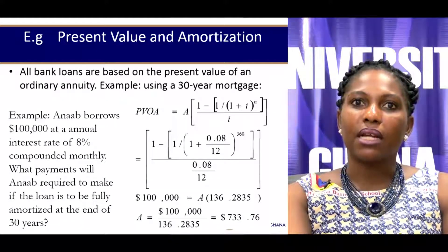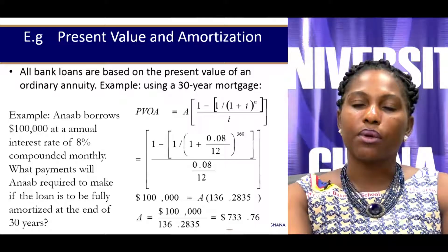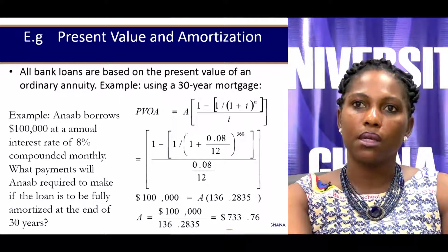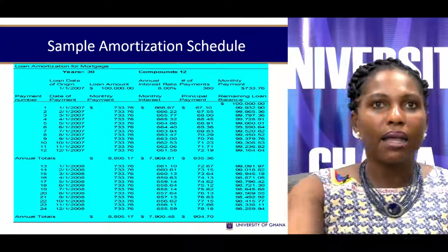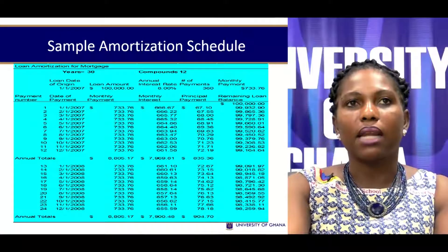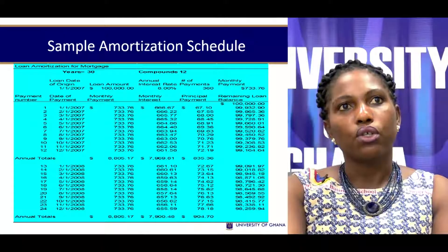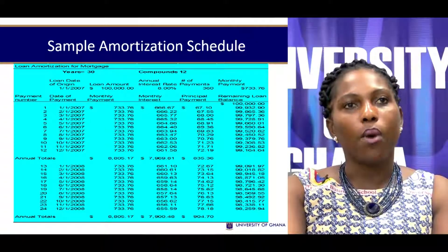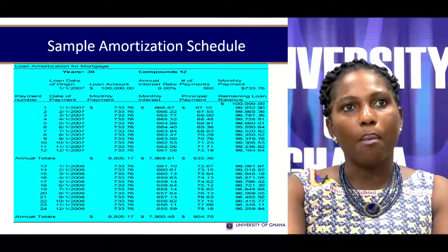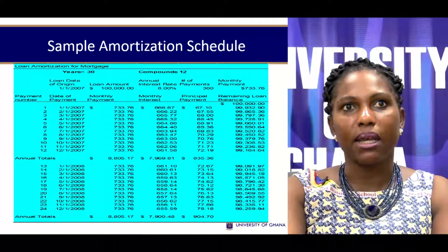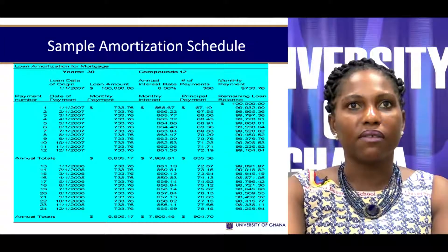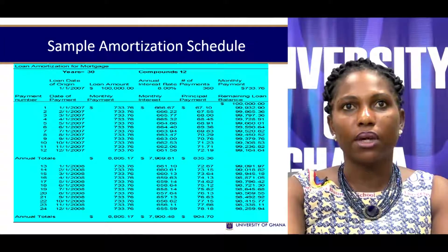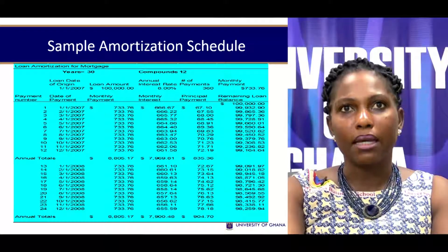Solving for that, we find that Anna is supposed to make a monthly payment of $733.76. Let's see how that plays out in the amortization schedule. In period one — month one of the first year — Anna will make a payment of $733.76 to the bank.